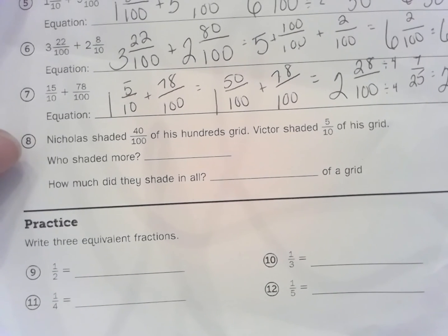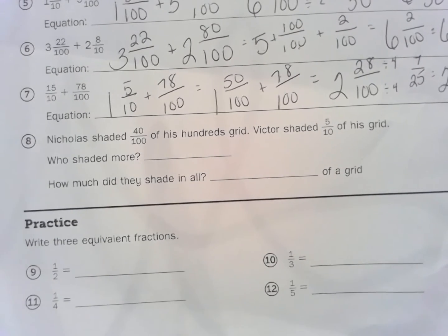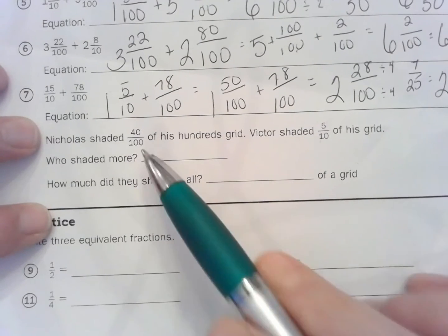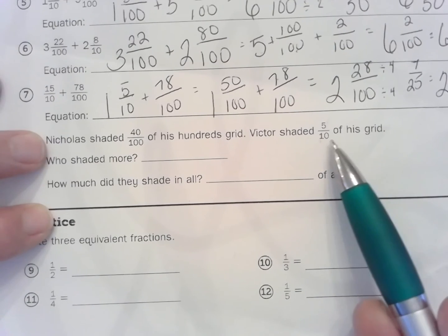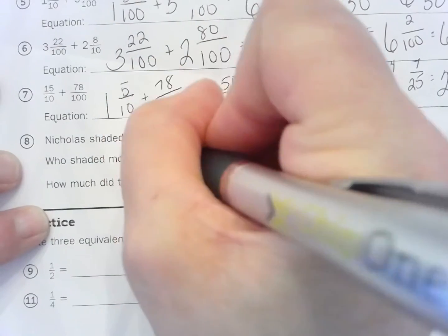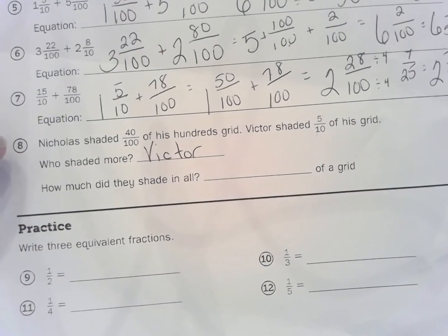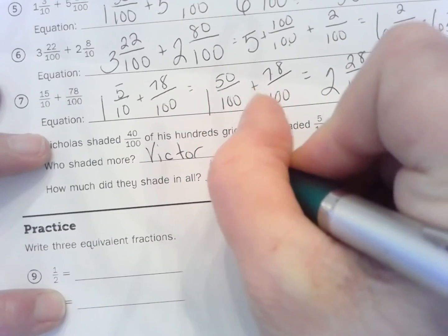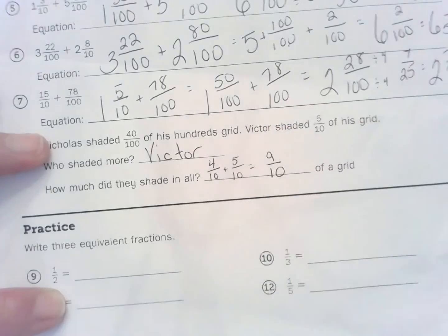Number 8. Nicholas shaded 40 hundredths of his hundreds grid. Victor shaded 5 tenths of his grid. Who shaded more? How much did they shade in all? So, 40 hundredths equals 4 tenths, and 5 tenths is 5 tenths, so Victor shaded more because 5 tenths is greater than 4 tenths, or 50 hundredths is greater than 40 hundredths. How much did they shade in all? So, 4 tenths plus 5 tenths equals 9 tenths, so they shaded 9 tenths of the grid.